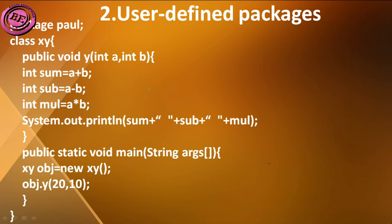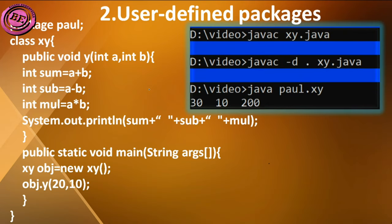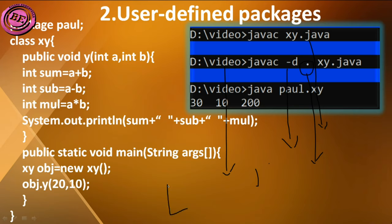Now let us discuss how to create these packages. The first step is to compile the program. After successful compilation, we create the package. The syntax is: javac -d . (dot represents the directory where we create the package). Here the directory is 'video', so inside the video directory we are creating another folder named 'poll'. So we are creating a poll package, and the xy class is saved in this poll package.